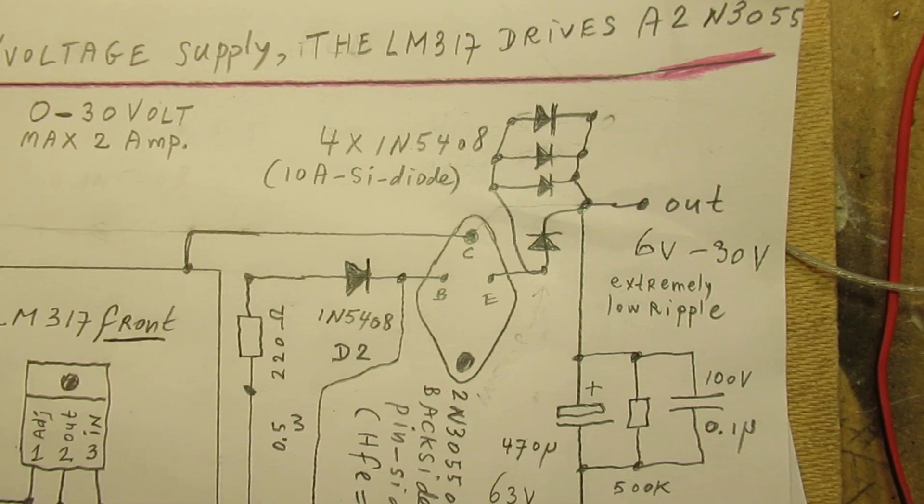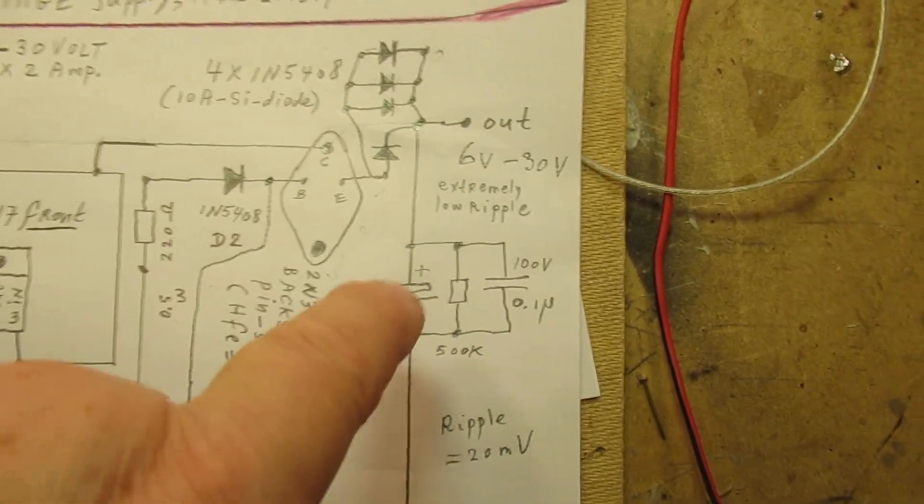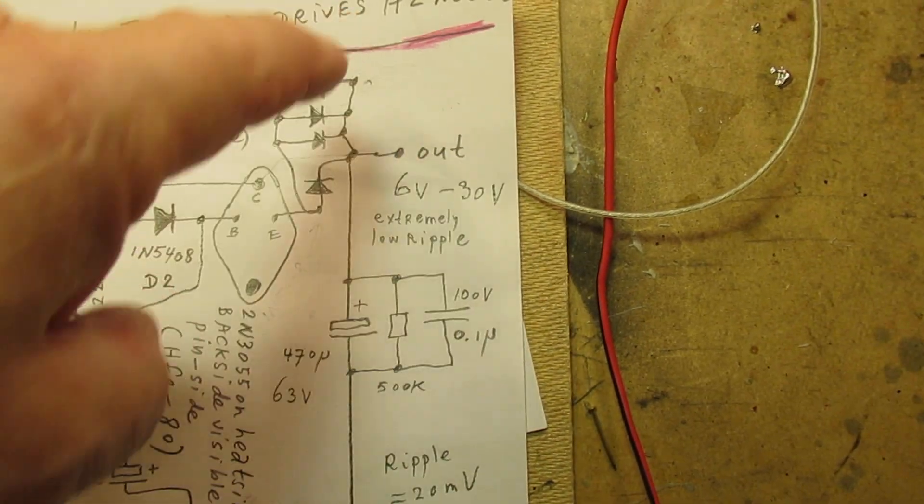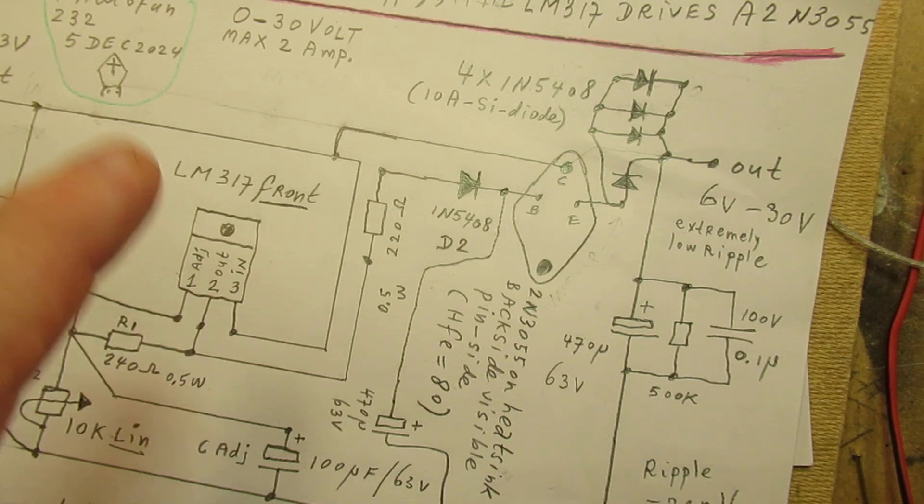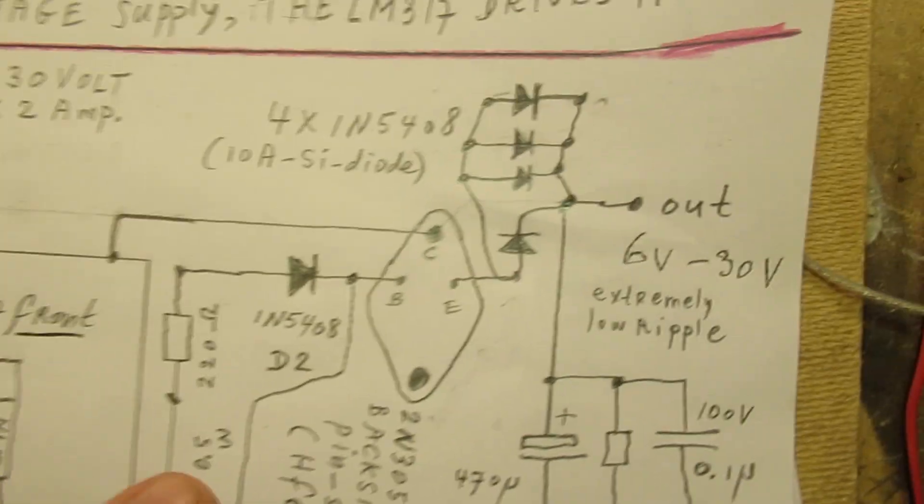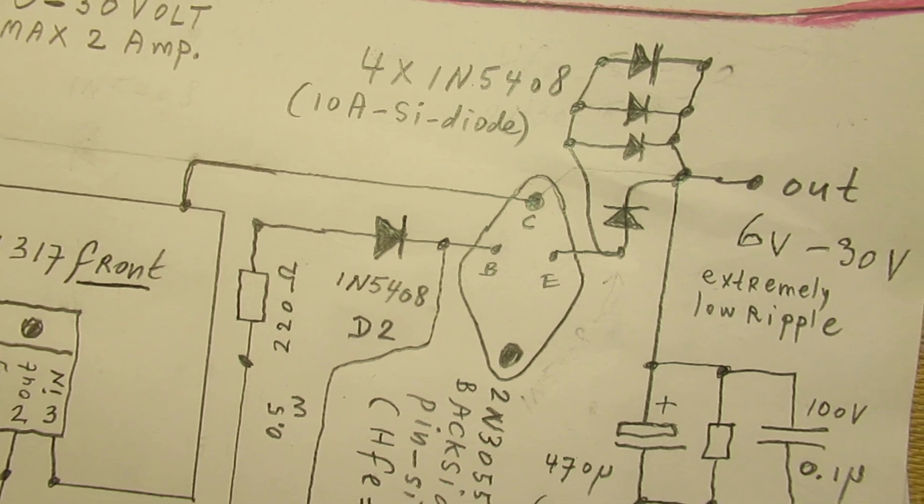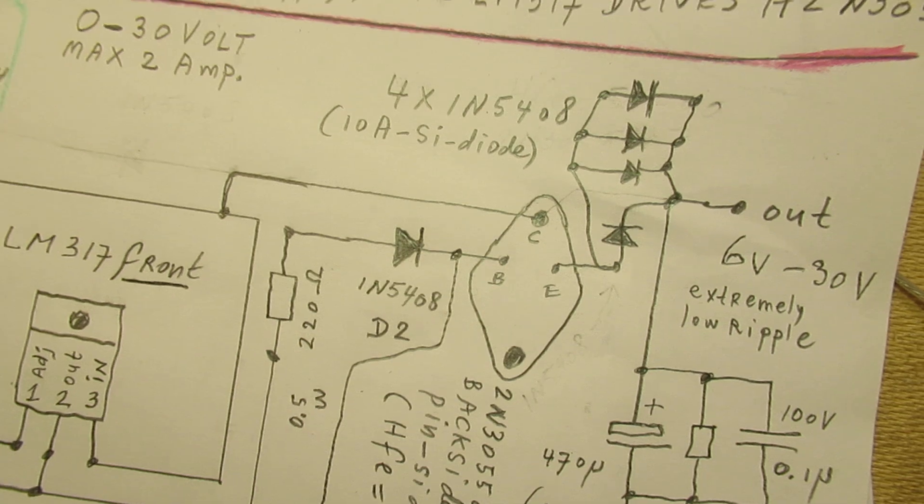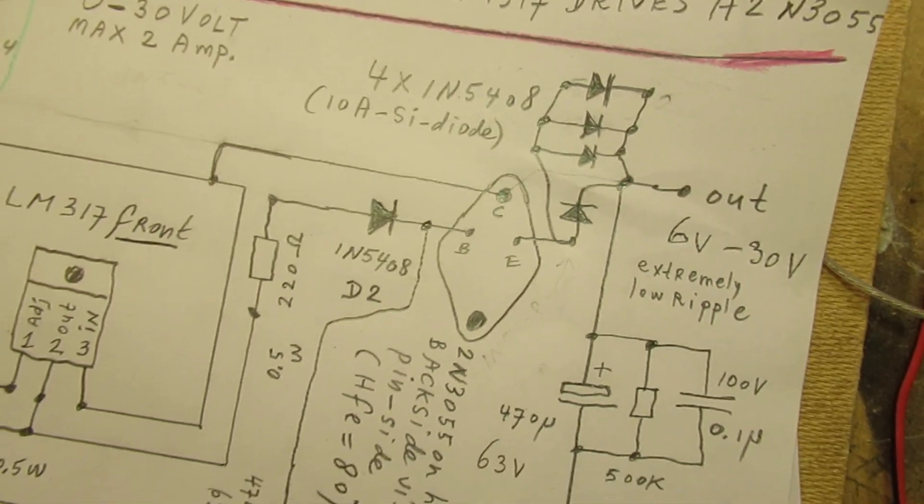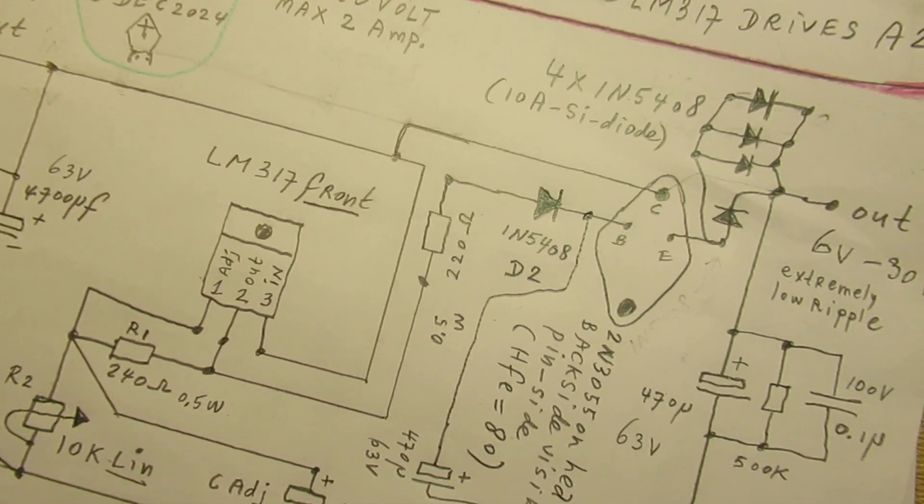And furthermore, these diodes prevent the charge out of the output cap can flow back to the regulator chip. And also here, I've used here also a diode, for the same purpose, to prevent that in whatever way charged current can flow back to the regulator chip. Because it can damage that chip.